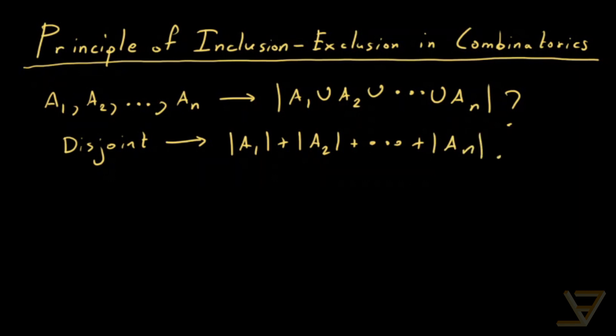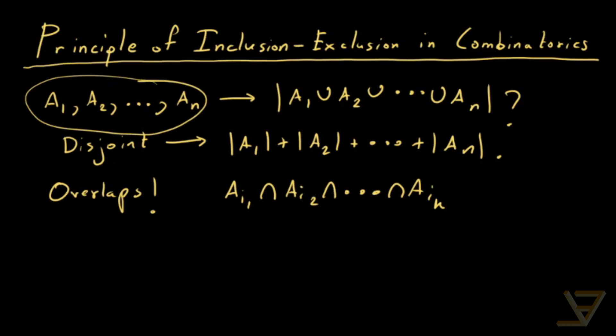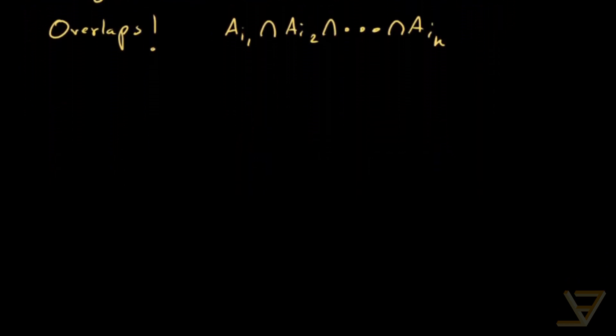But the issue occurs when there are overlaps. So the overlaps consist of intersections of sub-collections of these sets like A1 intersect A2 intersect all the way through to Aik for some integer k between 1 and n. We're taking intersections of subsets of this original collection of sets. And what we're going to do is alternate between subtracting and adding overlaps so that we get the cardinality of the union of all the sets. Let me give you an example.